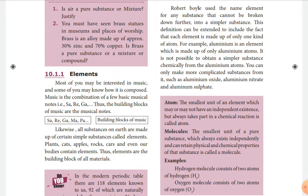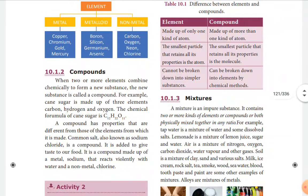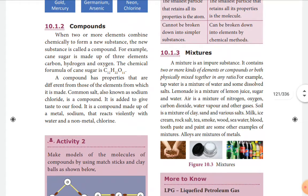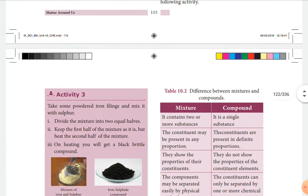A molecule is the smallest unit which can exist independently. Compounds are substances formed by the combination of two or more elements, like salt, sugar, and glucose. We have also discussed the difference between elements and compounds. Mixtures are impure substances containing two or more kinds of elements or compounds mixed together in any ratio — for example, sugar and water, and air is also a mixture.